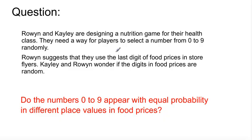Here's the question. Rowan and Kaylee are designing a nutrition game for their health class. They need a way for players to select a number from 0 to 9 randomly. Rowan suggests that they use the last digit of food prices in store flyers. Kaylee and Rowan wonder if the digits in the food prices are random. So the question is, do the numbers 0 to 9 appear with equal probability in different place values in food prices?